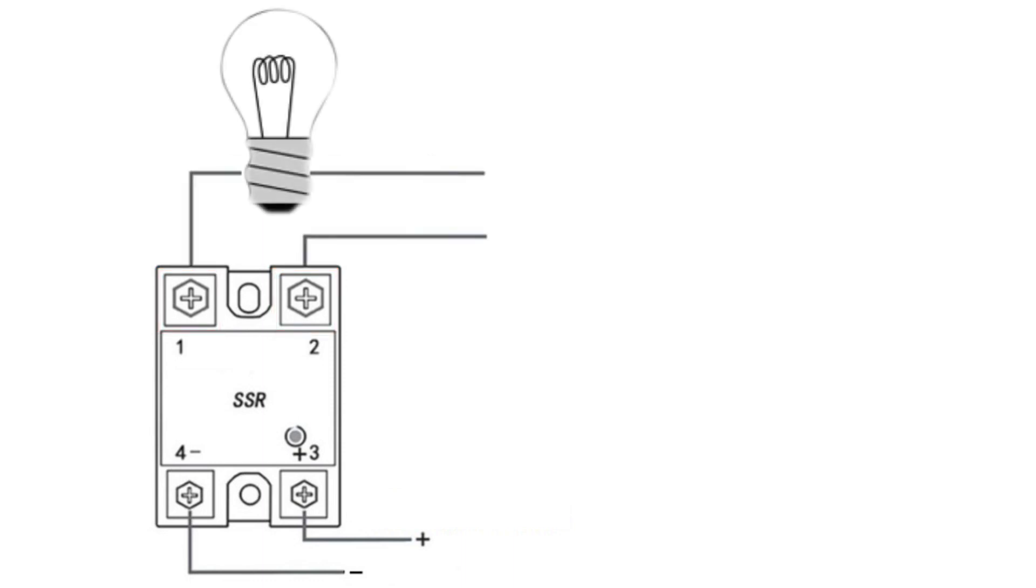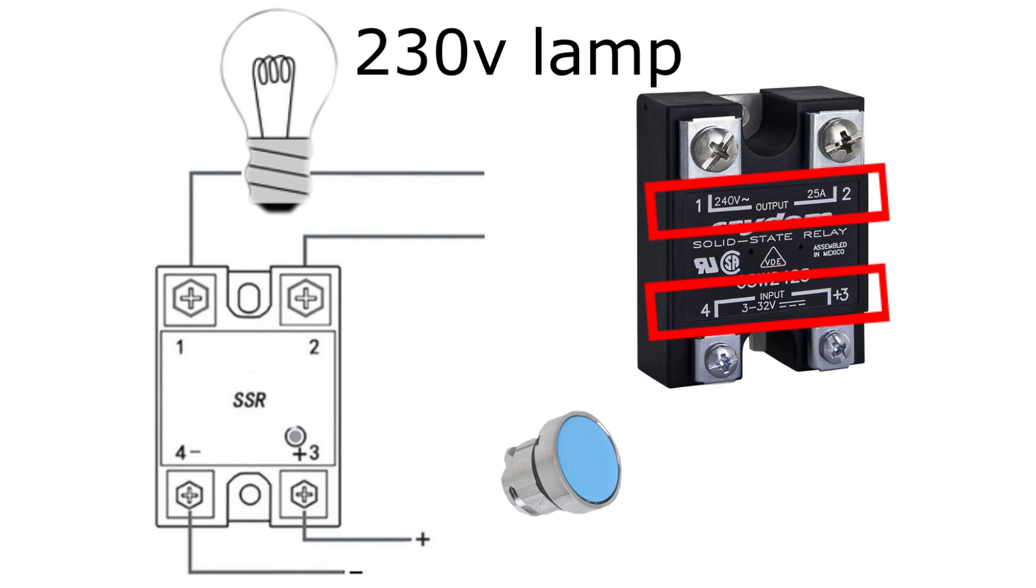Let's say we have a lamp that requires 230 voltage AC to turn on itself, but we want to control it with 24 voltage DC from a push button. Then we will need to find a solid-state relay that can handle these voltages, like this one for example.